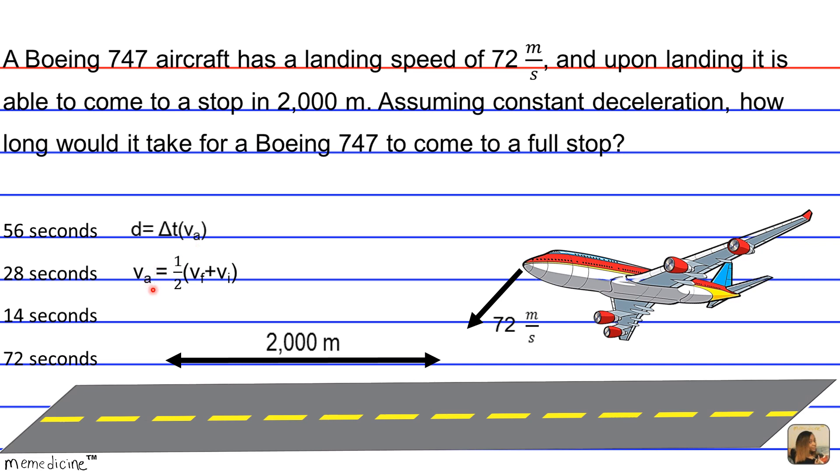And just note that V sub A, or average velocity, is equivalent to 1 half times the final velocity plus the initial velocity.